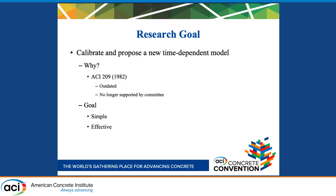The research goal is to calibrate and propose a new time-dependent model for concrete. The reason why we are doing this is because ACI 209 is old and outdated — it was made in 1982 and it is no longer supported by the committee. Our goal is to create a simple and effective creep and shrinkage model, and to make a more user-friendly model we have been meeting with engineer designers who give us their input on what they want to see in the model. This gives us a guide for what equations we should be looking into creating.